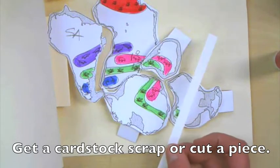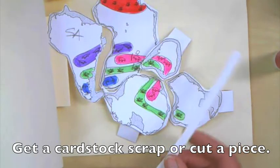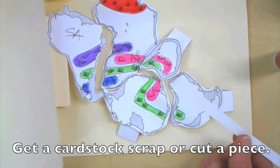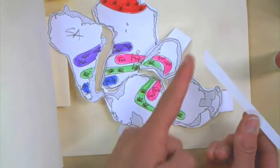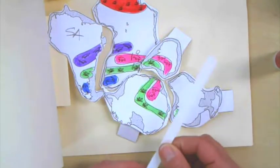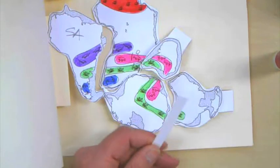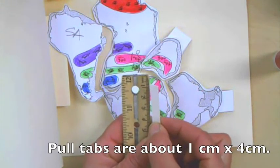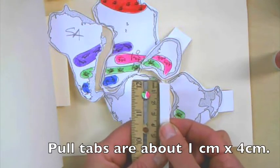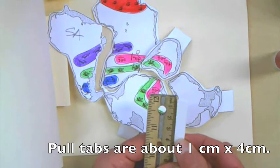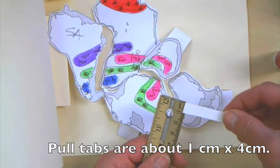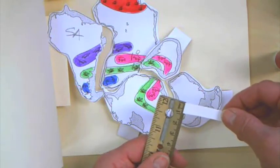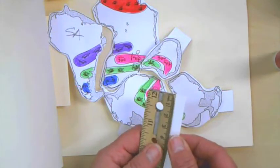Or you can find one of your scraps of file folder, which is what this is. It's a file folder end. And just cut that, oh, let's say four centimeters by, yeah, this is about one centimeter, half a centimeter, a little less than a centimeter by four centimeters.